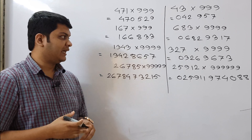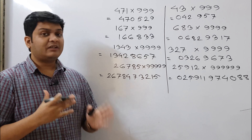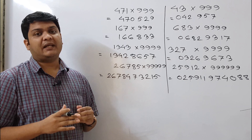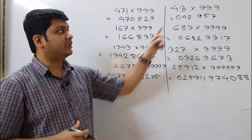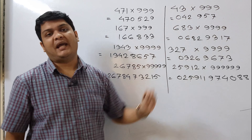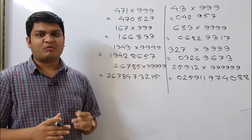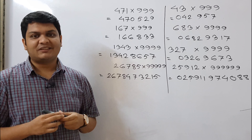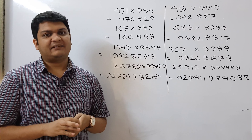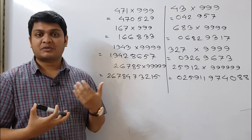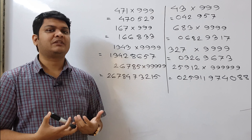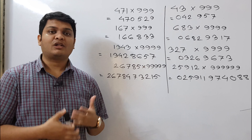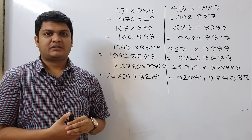That covers Cases 1 and 2 of the trick. Case 3 — when the digits in the multiplicand are greater than those in the multiplier — will be discussed in the next video. I hope you enjoyed this video. If it helped you, please subscribe to my channel and share it with your friends so they can also learn from it.